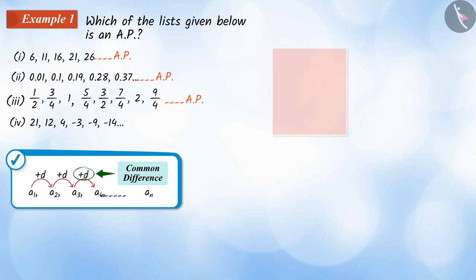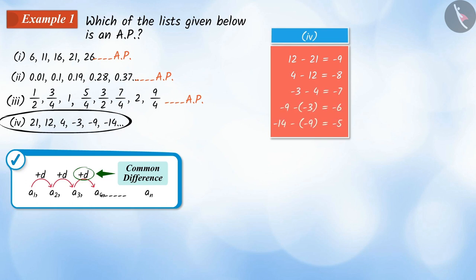On the other hand, because the difference between every two consecutive terms in the fourth list is not the same, it is not an AP.